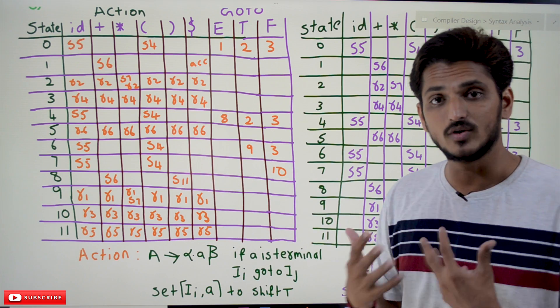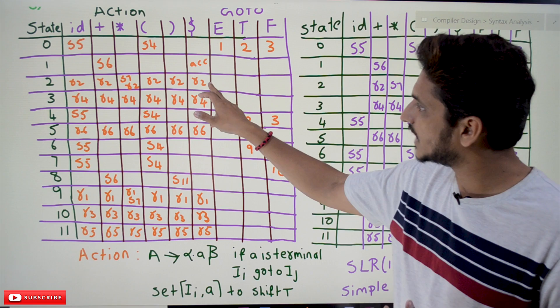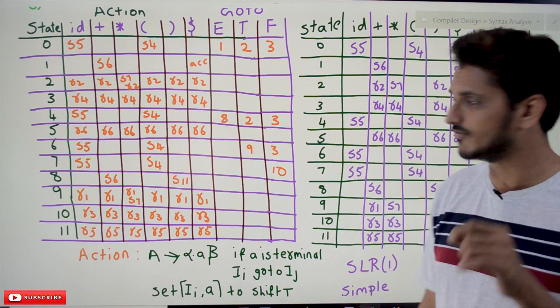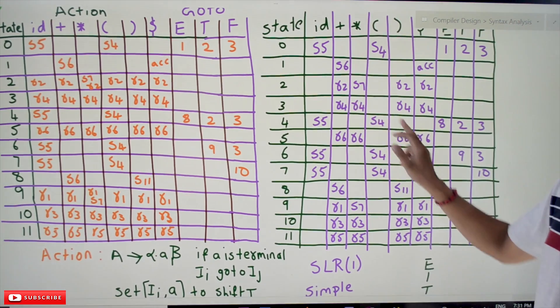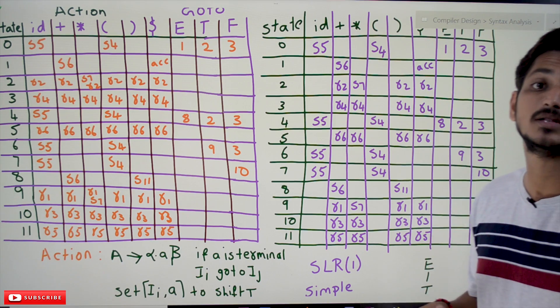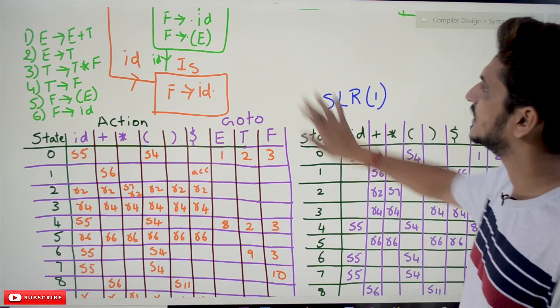We have written reduce action on all the terminal symbols. But the difference in SLR(1) is we are showing reduce action only on the follow symbols of E.